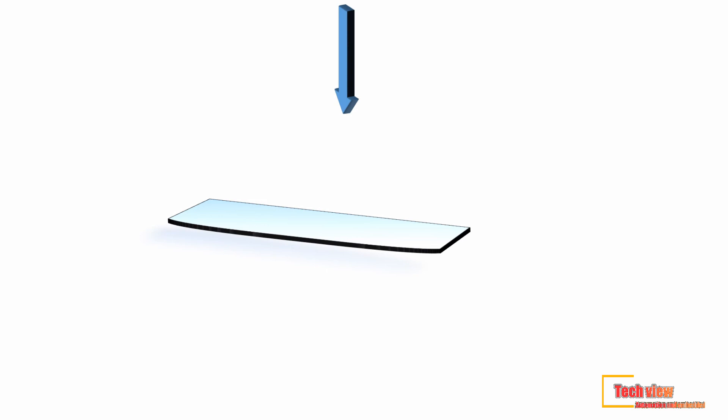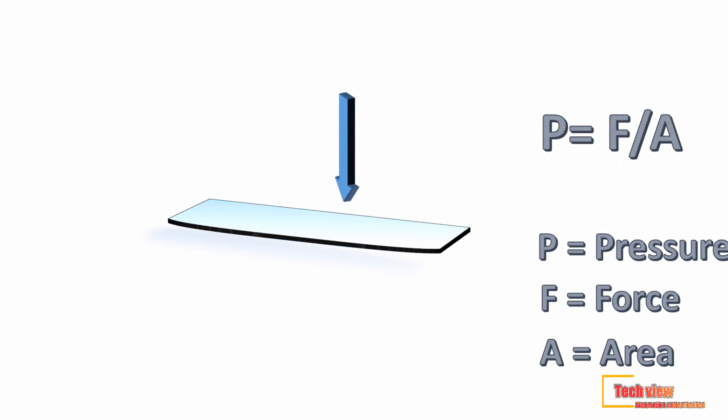Before we go to pressure transmitters, you must understand pressure. Pressure is the force applied perpendicular to the surface of an object per unit area over which that force is distributed. We can simply calculate pressure: P equals F divided by A. In this equation, P stands for pressure, F stands for force, and A stands for area.